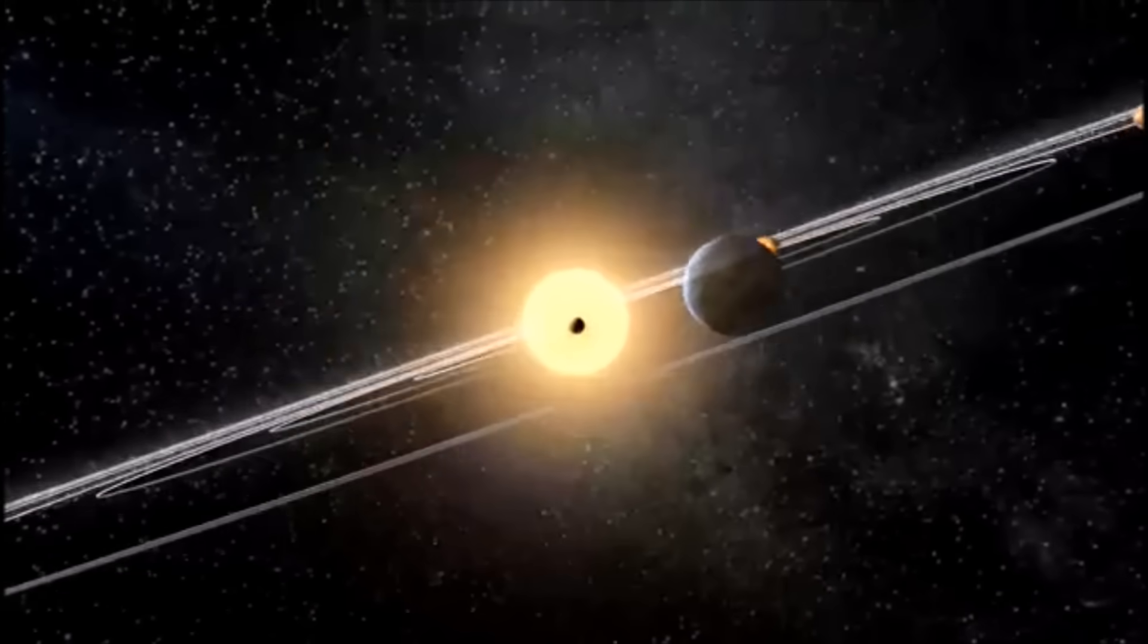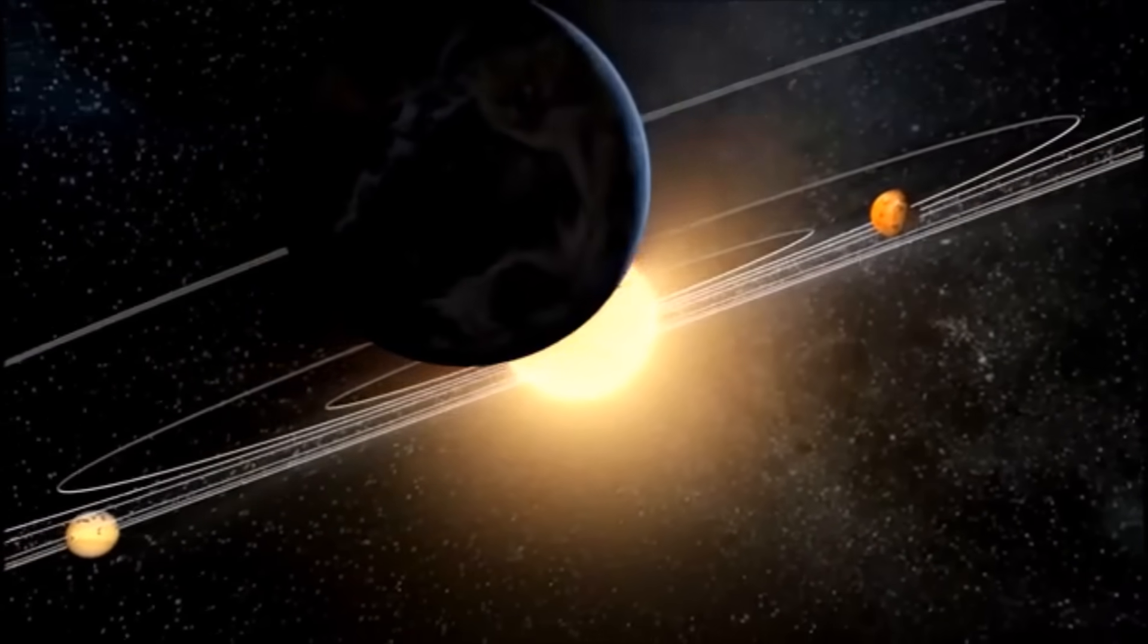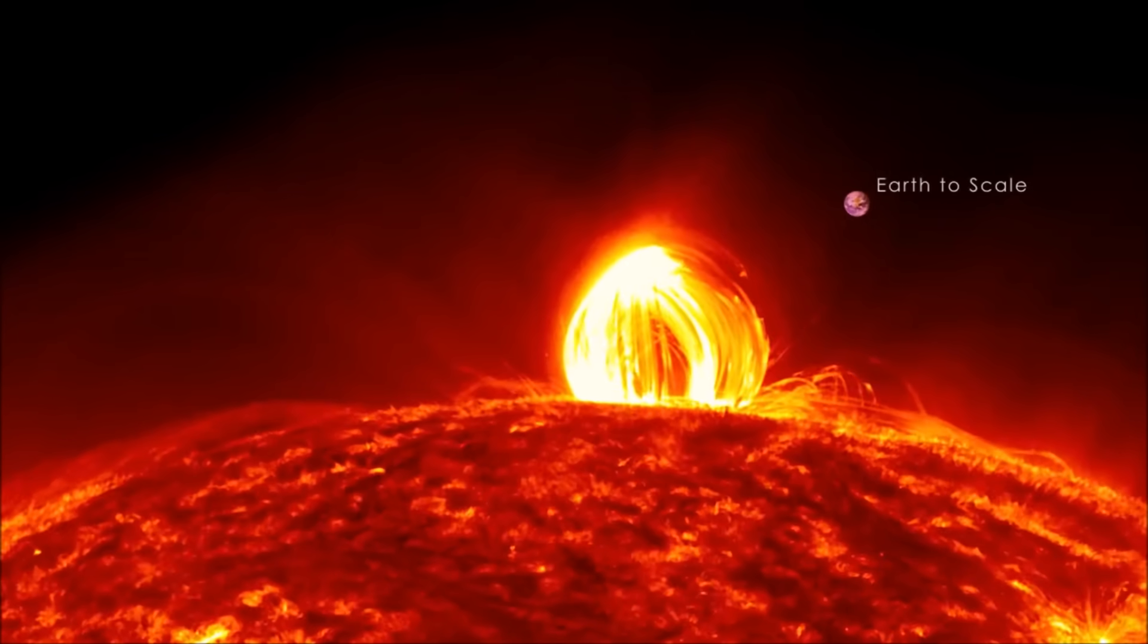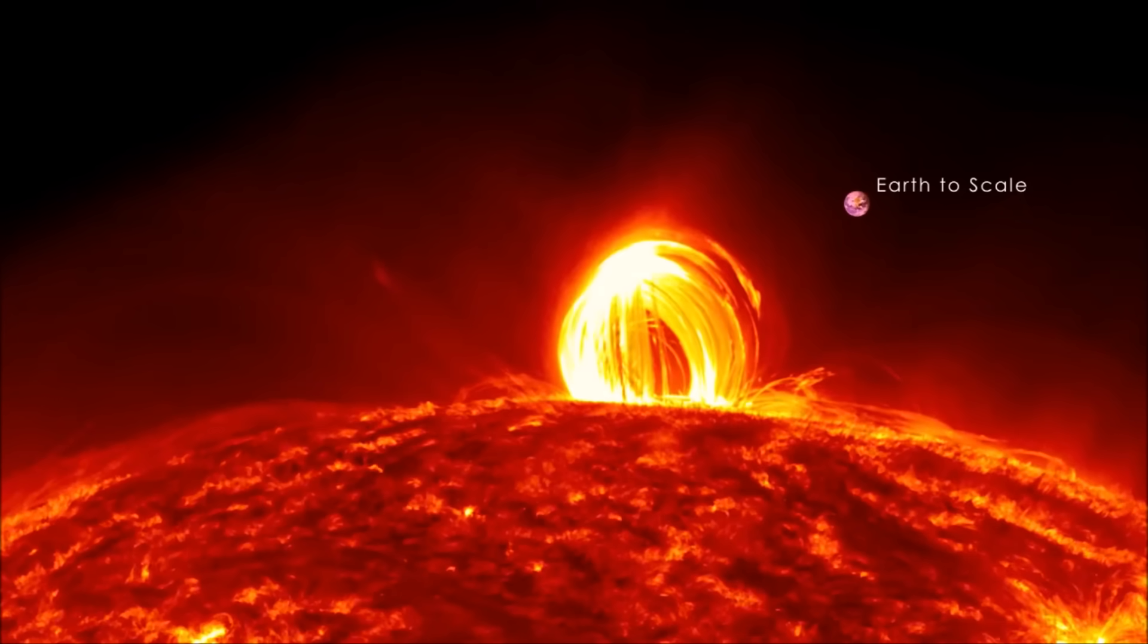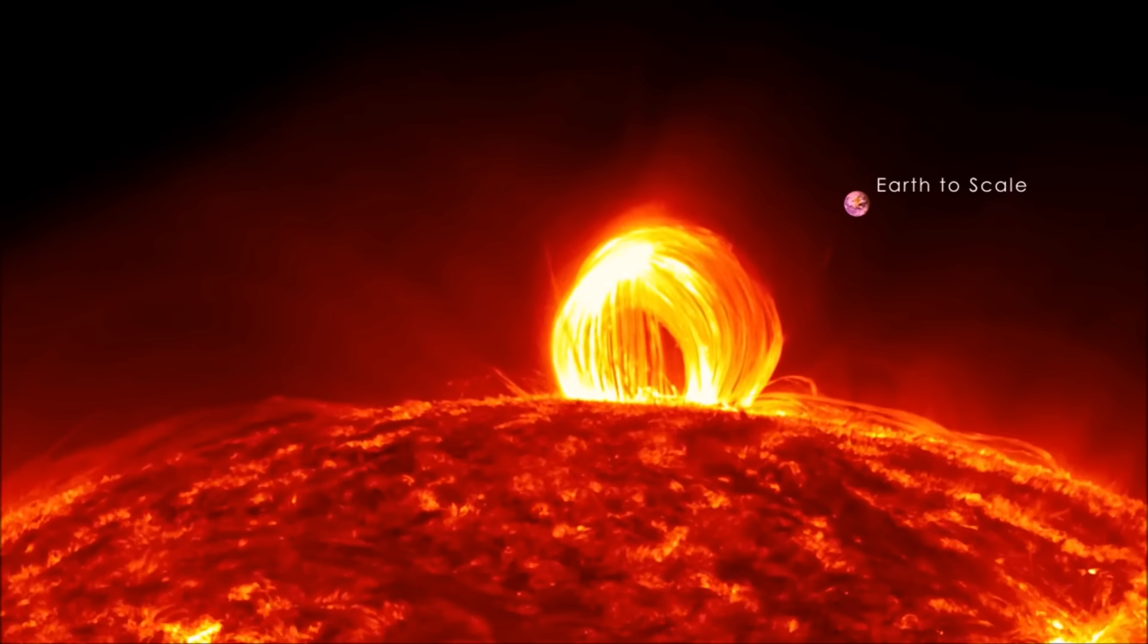Because the sun is so far away, it seems much smaller than it really is, more than 100 times the width of the Earth. The sun is so large that if it were empty, more than a million Earths could fit inside.